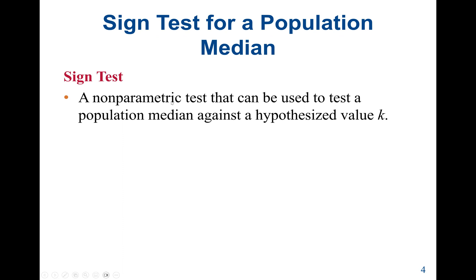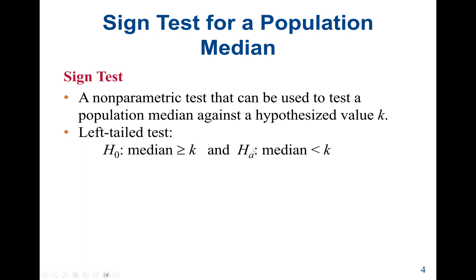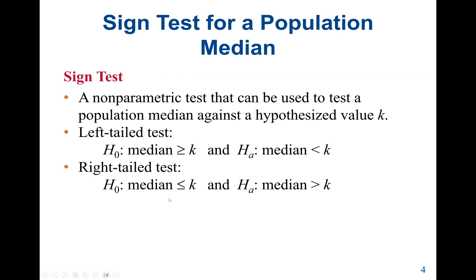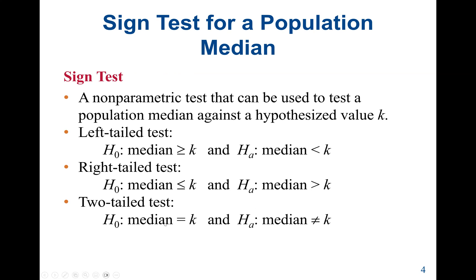A sign test is a non-parametric test that can be used to test a population median against a hypothesized value K. For a left-tail test, H0: median ≥ K and HA: median < K. For a right-tail test, H0: median ≤ K. For a two-tail test, H0: median = K and HA: median ≠ K.